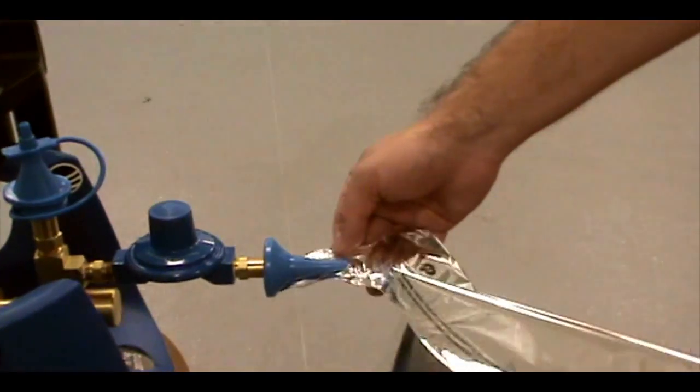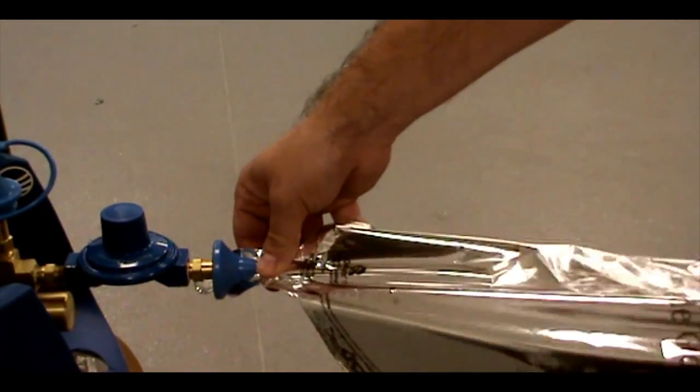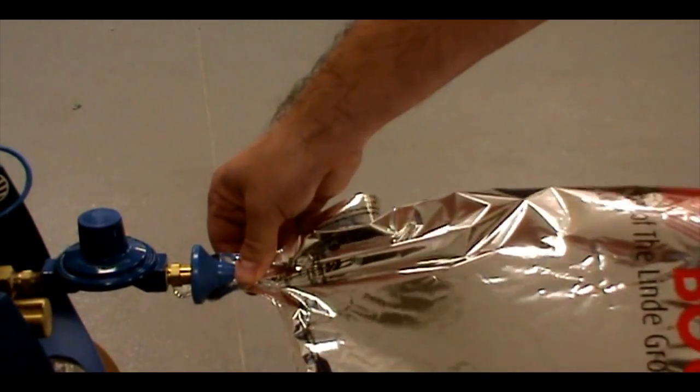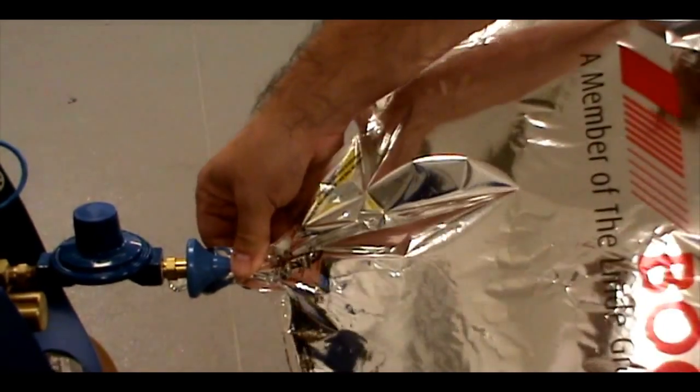Place the foil balloon over the outlet as shown. Push the outlet in to release the helium. The gas will shut off when the balloon is full, preventing over-filling.